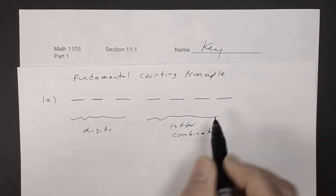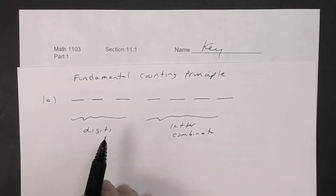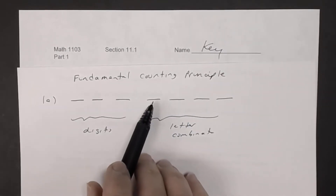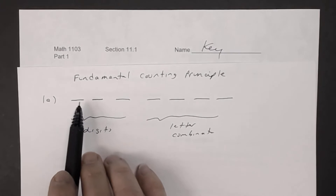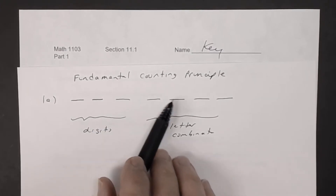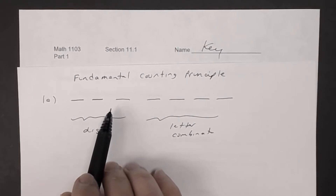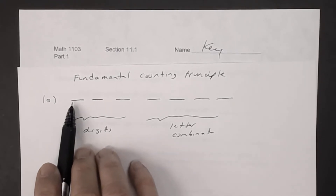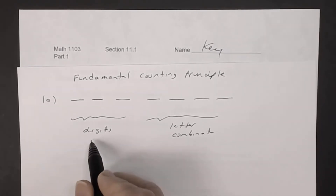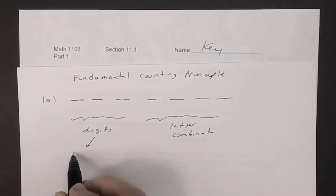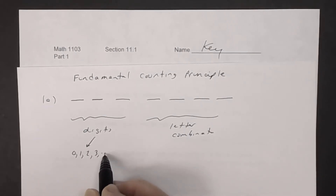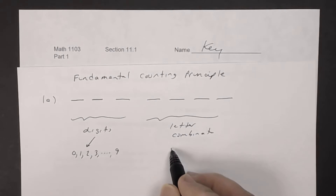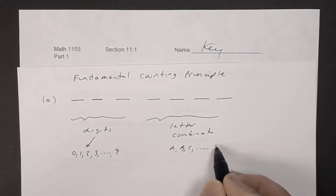Using the fundamental counting principle: the number of ways in which a series of successive things can occur is found by multiplying the number of ways in which each thing can occur. A digit consists of the numbers 0 through 9, and the letters consist of the alphabet, A through Z.